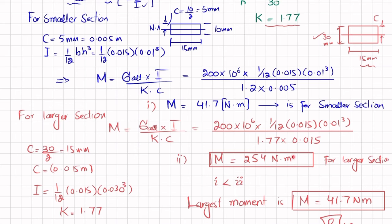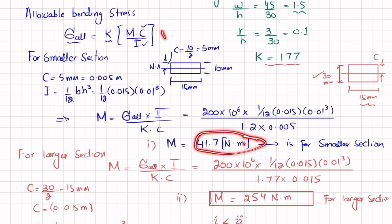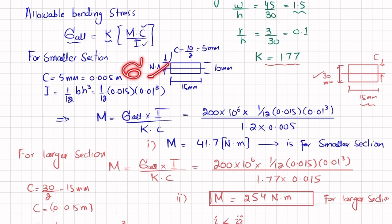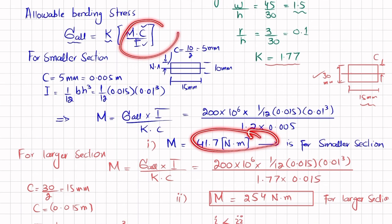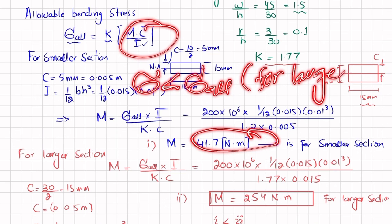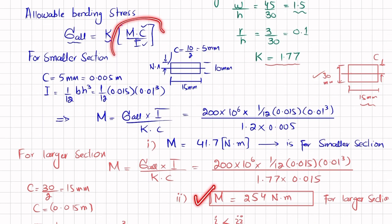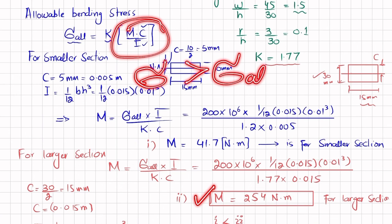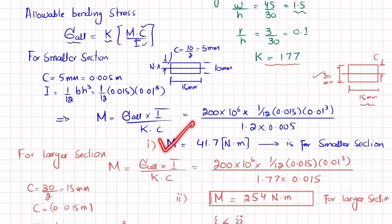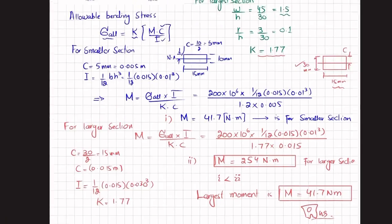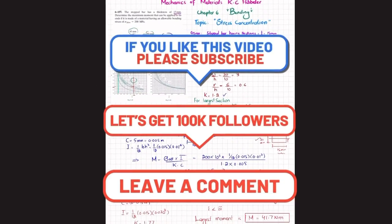Many students ask: since 254 N·m is the larger value, why don't we select it? The answer is: if we apply M = 41.7 N·m, the stress in both sections remains at or below the allowable stress — both sections are safe. But if we apply M = 254 N·m, the stress in the smaller section would exceed the allowable stress and the bar would fail. Hence we select the smallest moment, 41.7 N·m, as the maximum safe moment for this system.